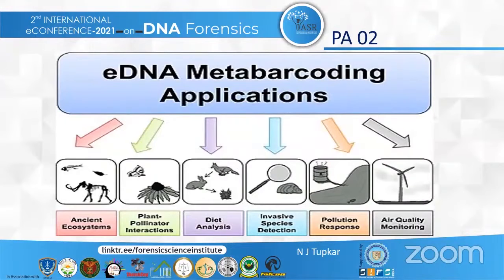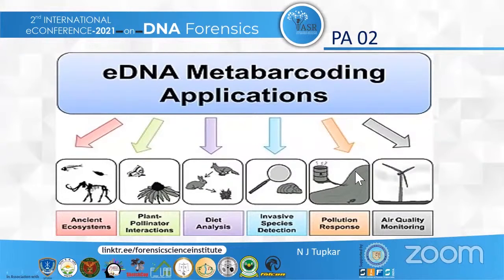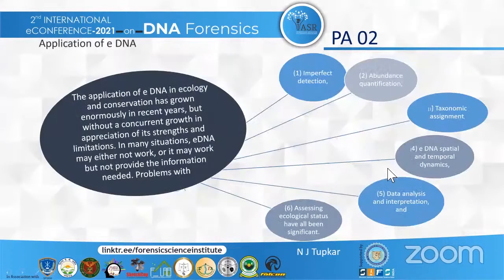Environmental DNA metabarcoding has several applications, including ancient ecosystem analysis, plant-pollinator interaction, diet analysis, and invasive species detection. Across all of these applications, we can monitor species health, pollination and pollution responses, and air quality monitoring.